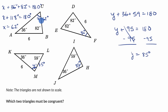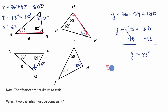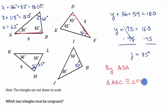Now let's look at the top two triangles. We know their angles are all the same, and we can apply angle-side-angle: 36 degrees, length 6, 82 degrees for triangle ABC, and 36 degrees, length 6, 82 degrees for triangle FDE. So by angle-side-angle, triangle ABC is indeed congruent to triangle FDE.